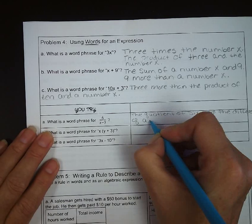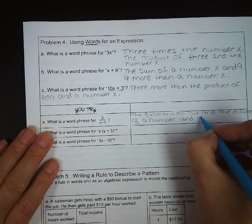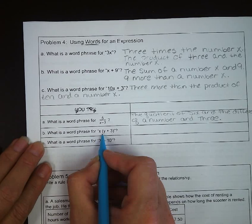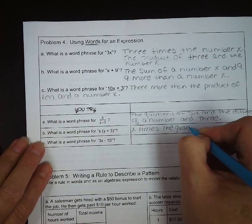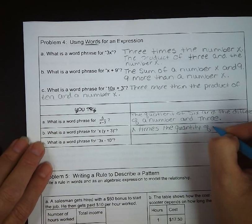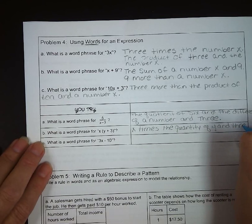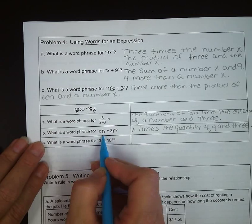What is a word phrase for x times y plus three? We could say x times the quantity of y and three. I think there's some others that we'll talk about in class. So if you came up with something else, because I'm running out of room, if you came up with something else, let's make sure that it gets discussed in your classes.